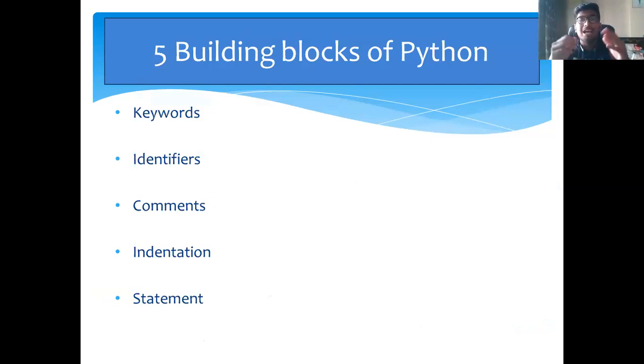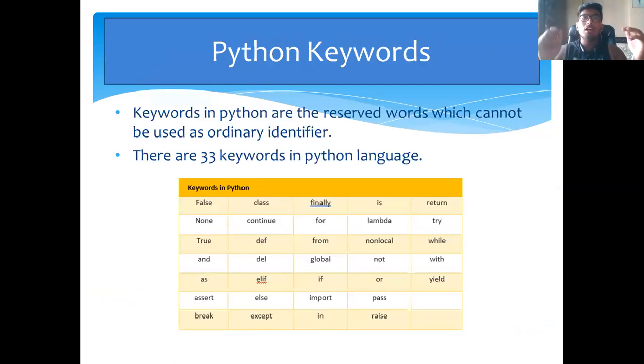Let's start with Python keywords. Keywords are the reserved words that serve a specific purpose and which cannot be used as an ordinary identifier. There are 33 keywords in Python language. As you can see, the list of all 33 Python language keywords are on your screen.